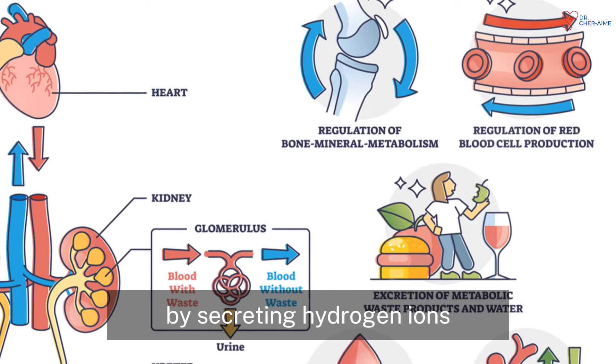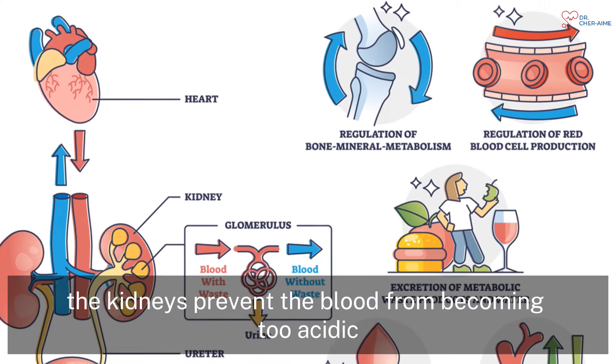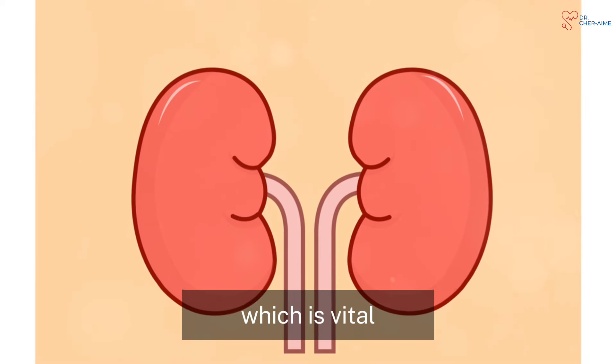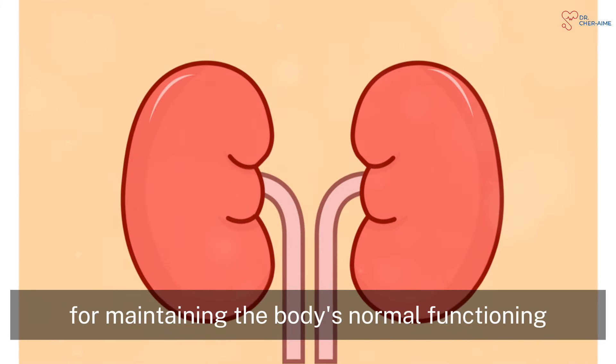By secreting hydrogen ions, the kidneys prevent the blood from becoming too acidic, which is vital for maintaining the body's normal functioning.